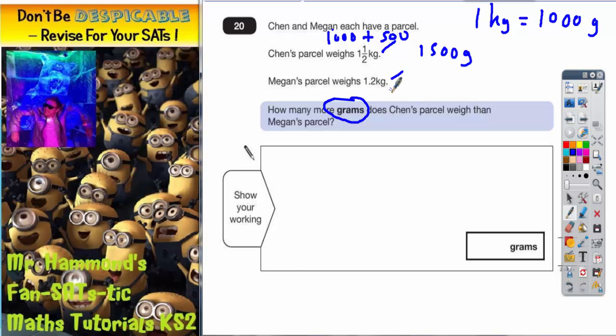Megan's is 1.2 kilograms. Well, again, your one is going to be 1,000, and your 0.2 is going to be—well, 0.5 would be 500, so 0.4 would be 400, 0.3 would be 300, so 0.2 is actually going to be 200 grams. So we've got 1,000 plus 200 grams, which is 1,200 grams.